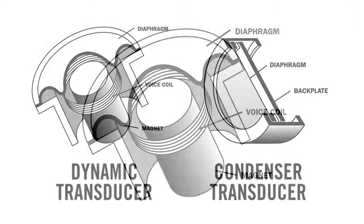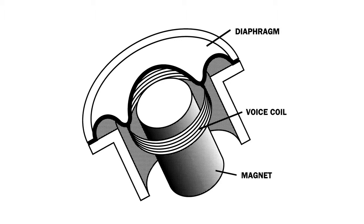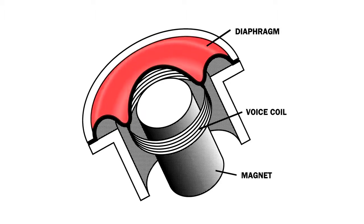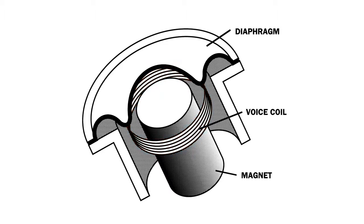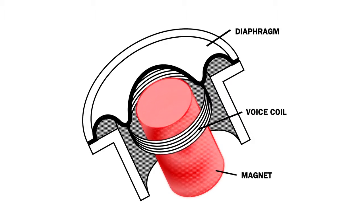In a dynamic microphone, sound waves strike a thin plastic diaphragm and cause it to vibrate. A coil of wire attached to the back of the diaphragm vibrates along with it. As the coil moves back and forth, it passes through a magnetic field created by a magnet, which generates an electrical signal that corresponds to the sound.